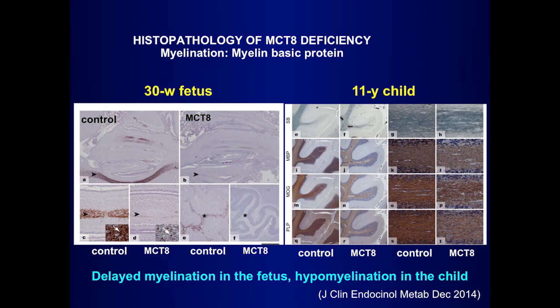This is myelination. Myelination is under control of thyroid hormone. This is the expression of myelin basic protein. You can see strong differences in the cerebellum and in other parts of the brain. And here in the child also there is deficient myelination.